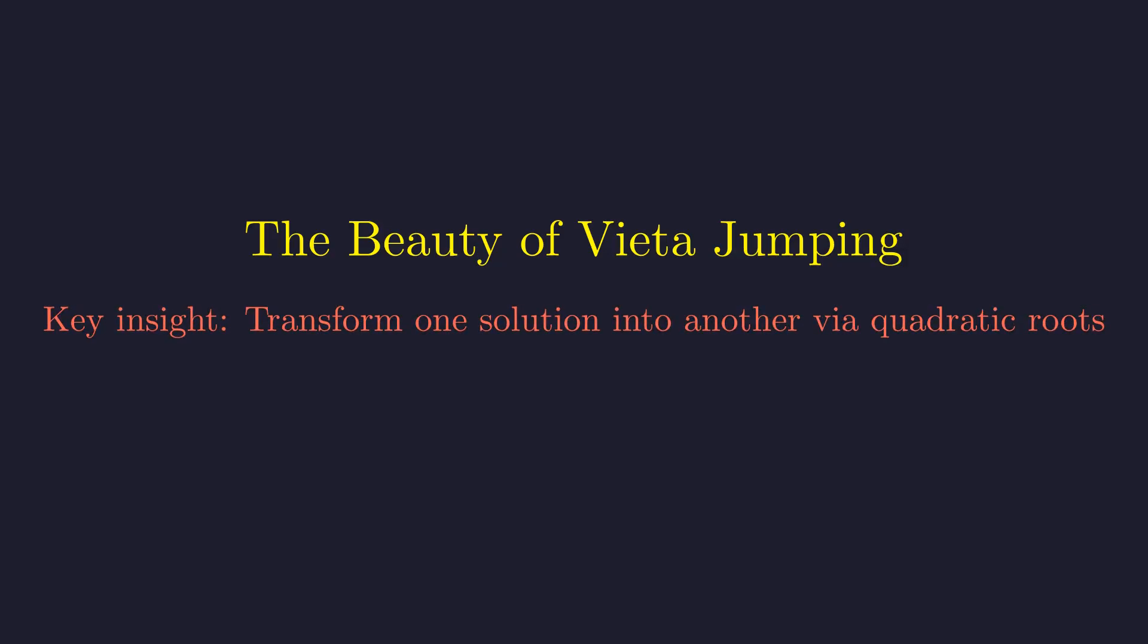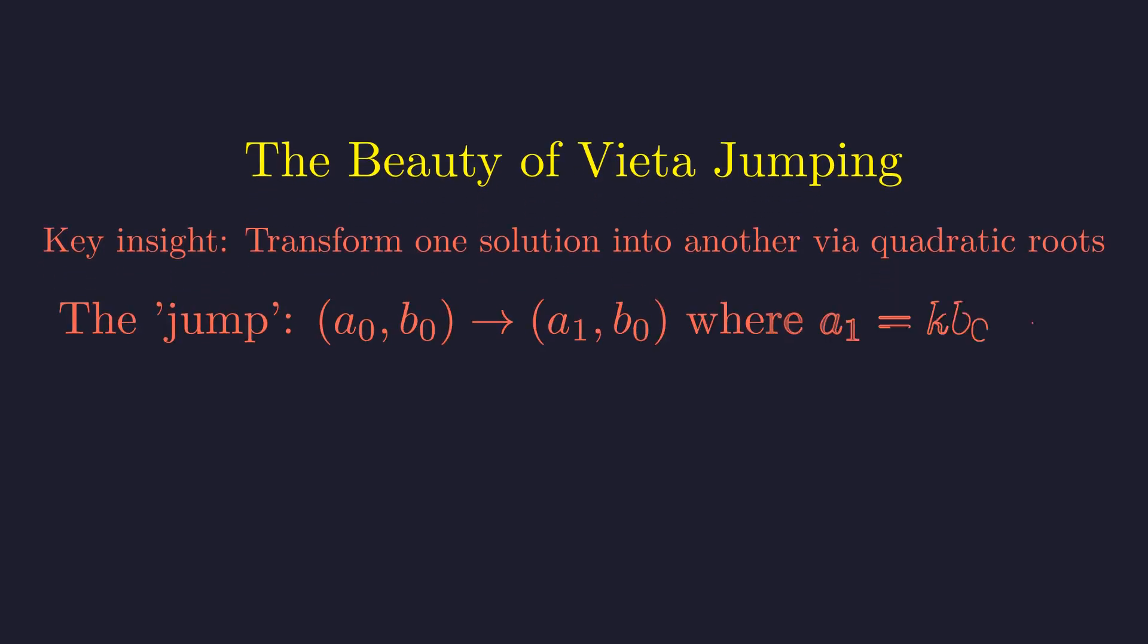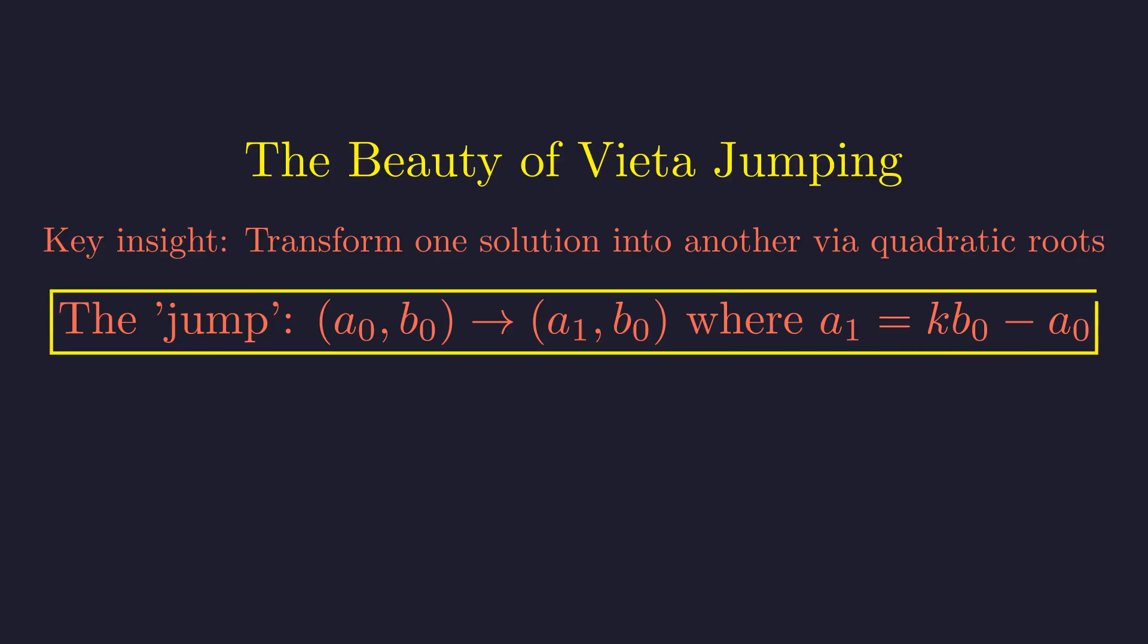This problem showcases the power and elegance of Vieta jumping, a technique that has become a cornerstone of competition mathematics. The key insight is that we can transform any integer solution into another through the magic of quadratic equations and Vieta's formulas. The jump formula gives us a systematic way to find new solutions: a1 equals k times b0 minus a0. This simple formula encapsulates the deep connection between Diophantine equations and algebraic structures.